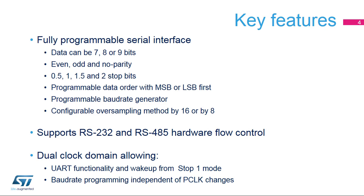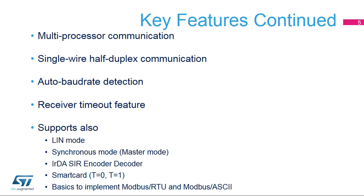This allows the peripheral clock to be throttled, along with the core clock, without disrupting communications. The USART features a multi-processor mode, which allows the USART to remain idle when it is not addressed. In addition to full duplex communication, single-wire half-duplex mode is also supported.